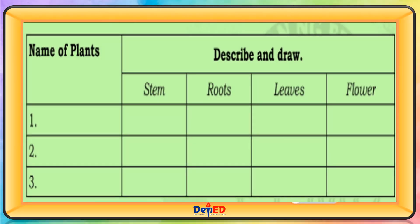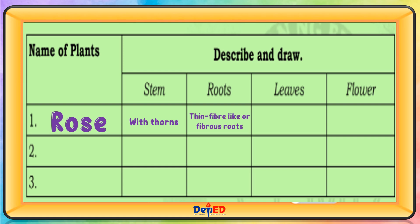Name of plants: Rose. Stem with thorns. Roots: thin fiber-like or fibrous roots. Leaves: small oval-shaped with serrated edges. Flower: soft, smooth, and multiple sets of petals.